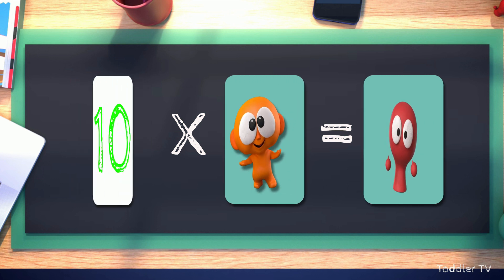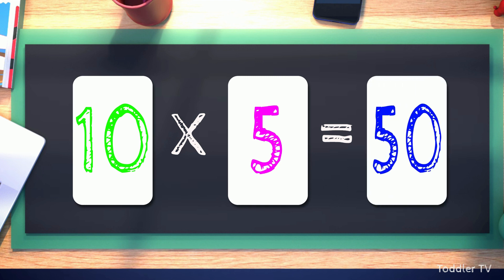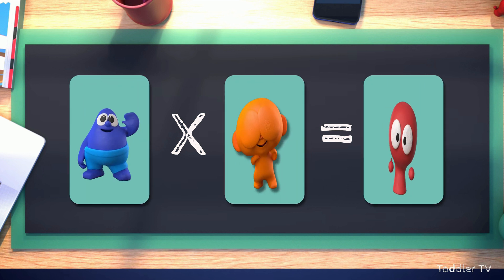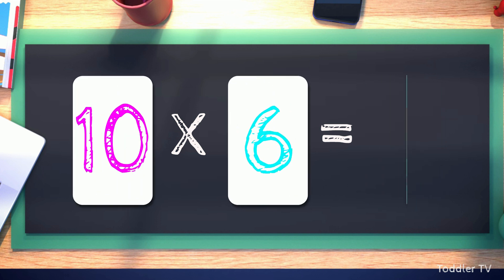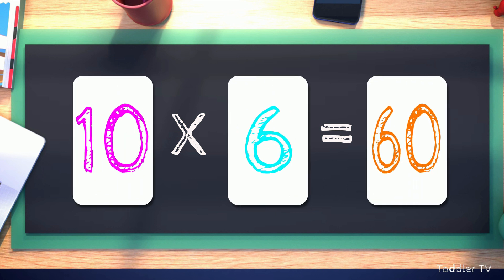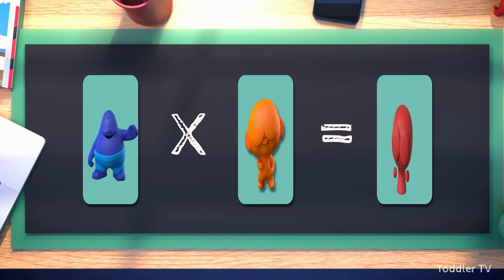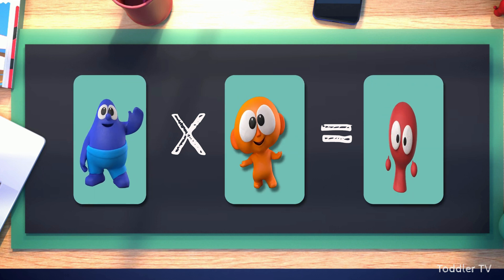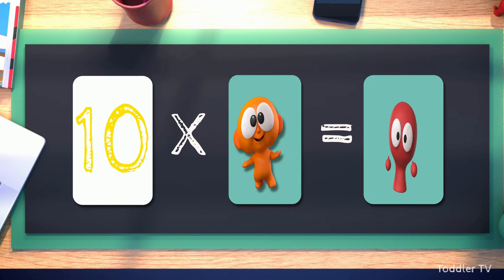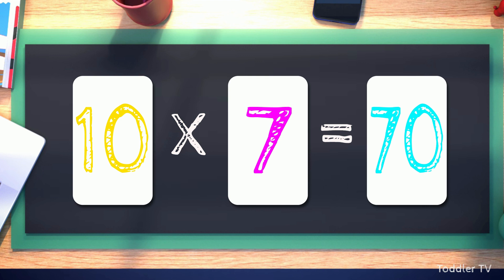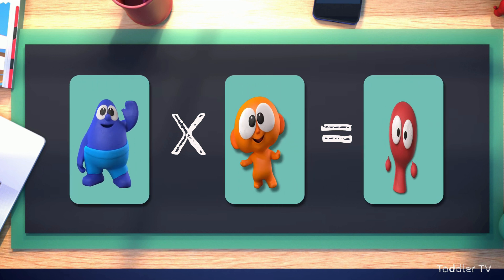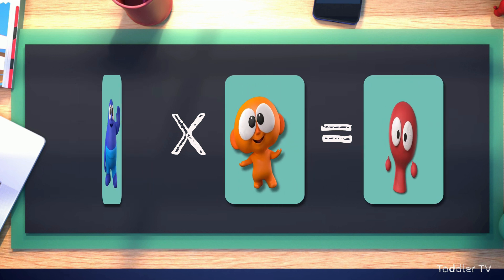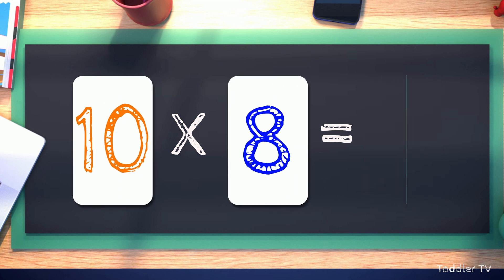Ten times five equals fifty. Ten times six equals sixty. Ten times seven equals seventy. Ten times eight equals eighty.